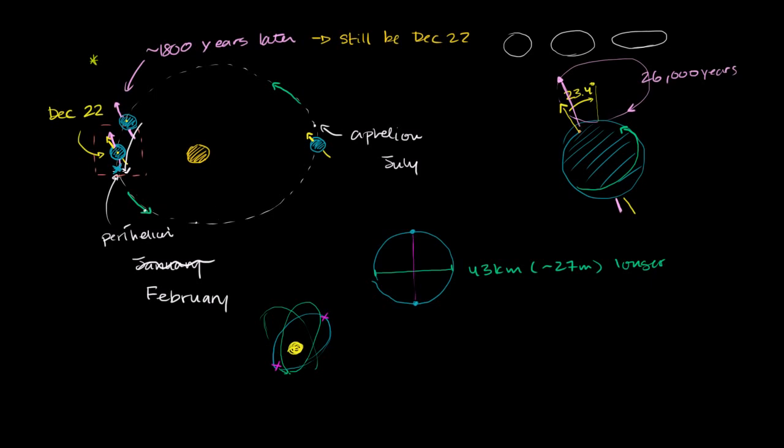And it would have taken 26,000 years if the perihelion itself were not changing, if it always stayed fixed over here, if we did not have this apsidal precession. But since it is also changing, you can kind of say it is over thousands of years moving in that direction.